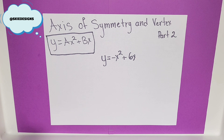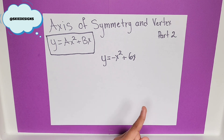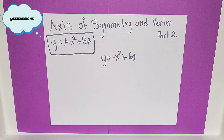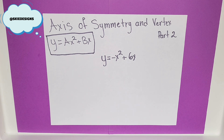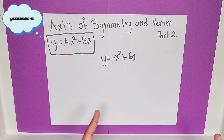Here, we have the equation y is equal to negative x squared plus 6x. Make sure to go back to my former video in order to see how we got to this point. In my last video, I said I was going to do different possibilities — what happens if you don't have bx, or what happens if you don't have c. This is the video where you don't have c. So, the new equation would be y is equal to ax squared plus bx.